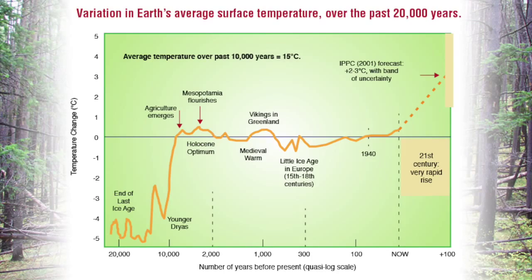Looking at this graph in the context of forests across the northern Rockies, we can see that the first 8,000 years of this relatively stable climatic period was marked by warmer and drier temperatures than we have now. With moisture and temperature playing an important role in forest development, we could speculate based on this climatic graph that forests as we know them across the northern Rockies really didn't exist until arguably 2,000 years ago.